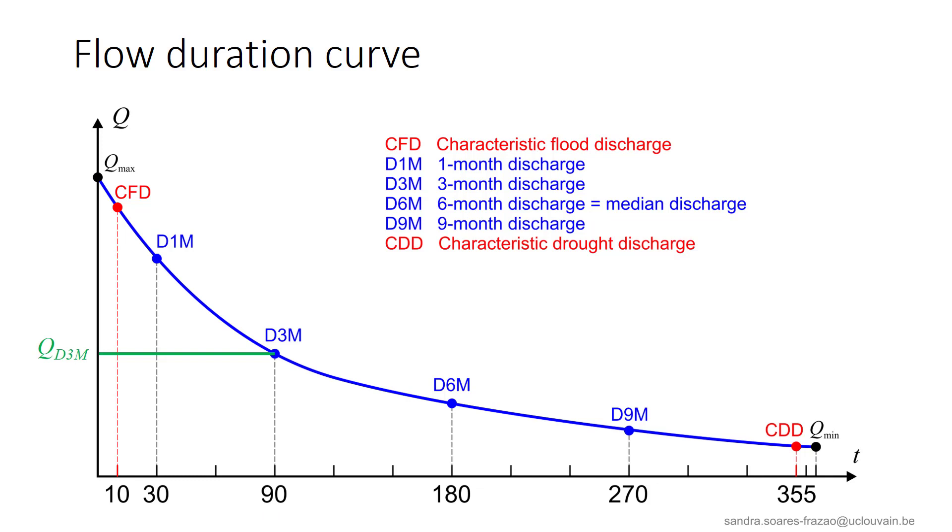Characteristic discharge and characteristic drought discharges are generally preferred to extreme values that are often measured in bad conditions. So we have here the characteristic flood discharge, just a little bit lower than the absolute maximum discharge, and the characteristic drought discharge a little bit higher than the absolute minimum discharge that was observed. These characteristic values are typically taken as the 10 days values and as the 355 days values, so a 10 days delay compared to the absolute extreme values Qmax and Qmin.